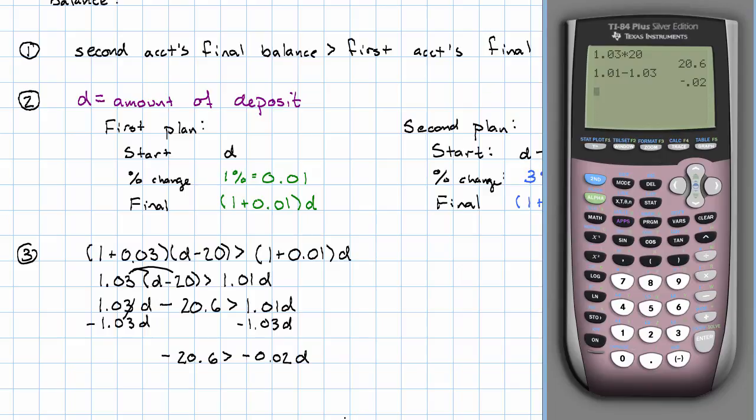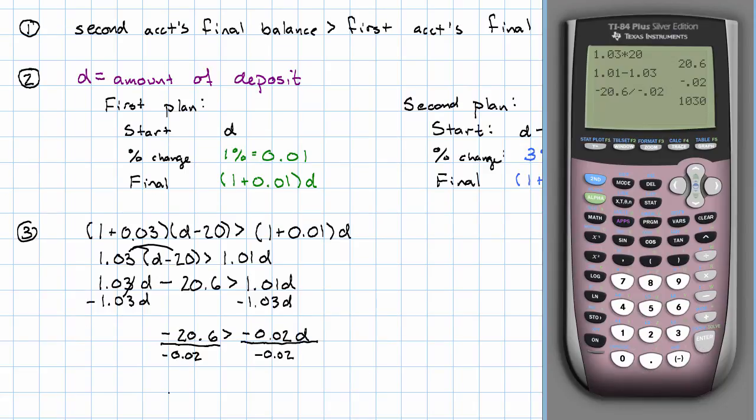I'm left with negative 20.6 is greater than 1.01 minus 1.03, which is negative 0.02 D. Now I need to get rid of that negative 0.02, dividing because those are multiplied together. Negative 20.6 divided by negative 0.02 is 1,030. I divided by a negative number, so I have to reverse the inequality.